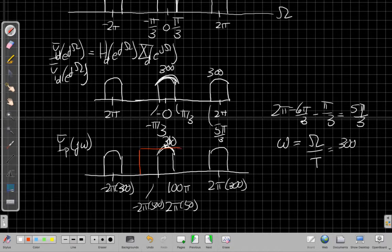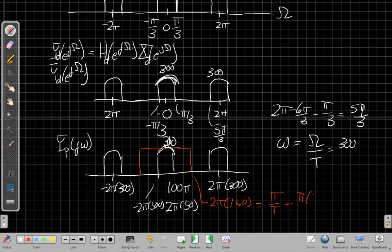And then the last step would be the reconstruction filter, like I showed in the last video. It's cutting off at 2π times 150, because that's my π/T, which is π times 300.